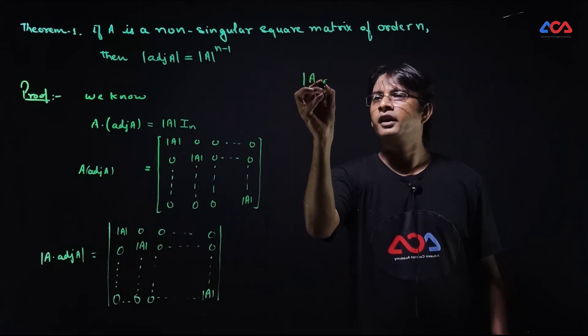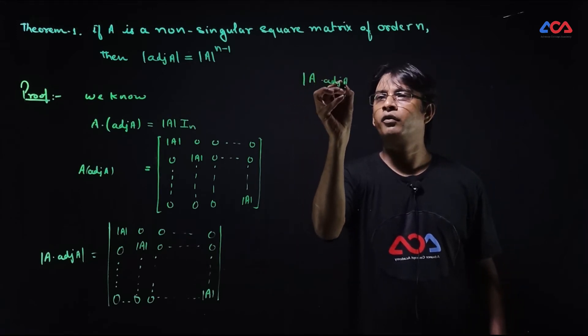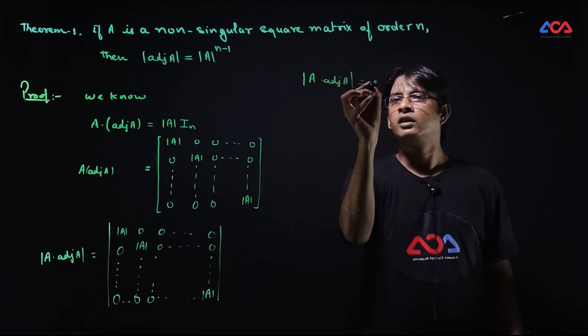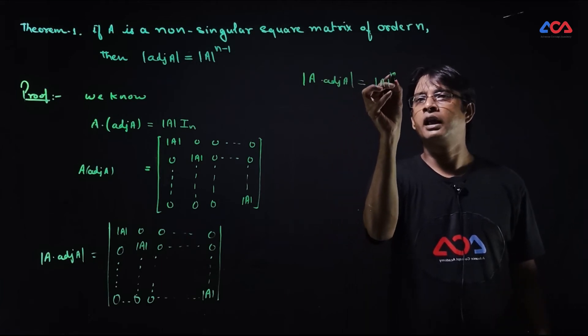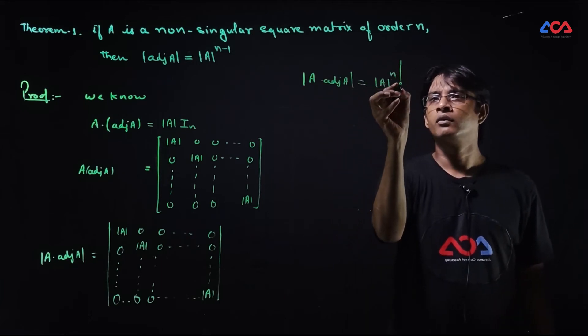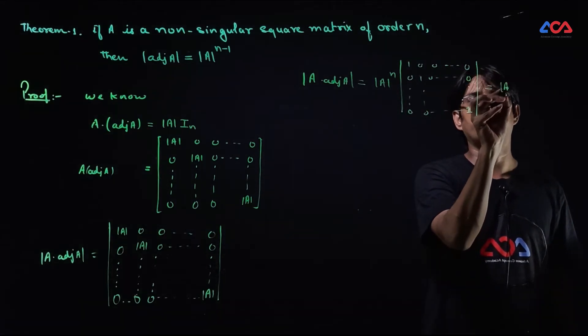Determinant of A into adjoint of A equals determinant of A to the power n, since the identity determinant is always 1.